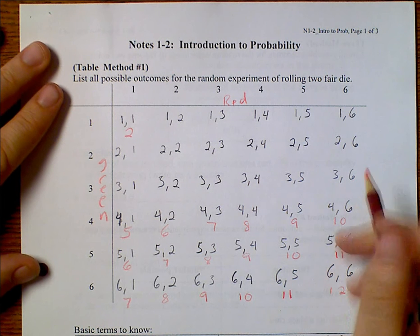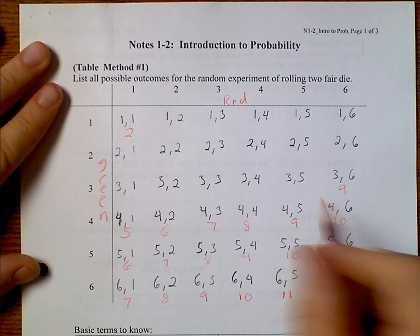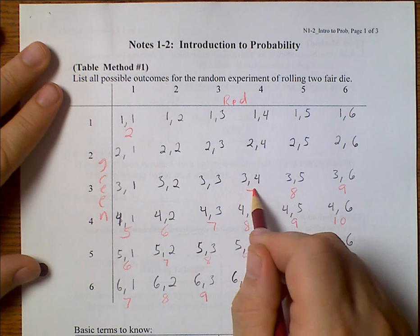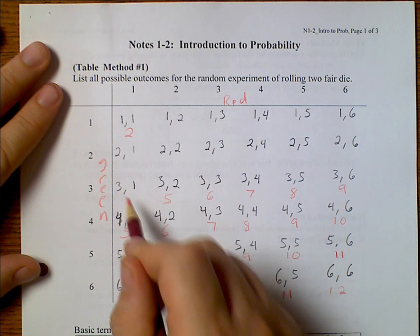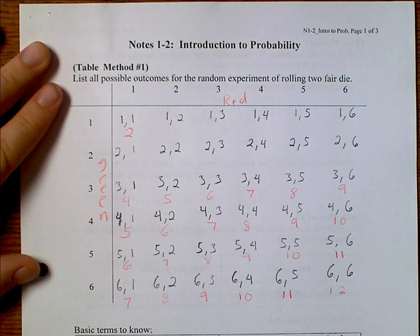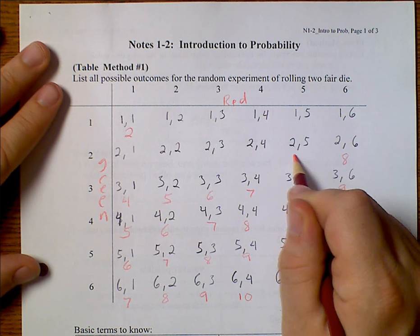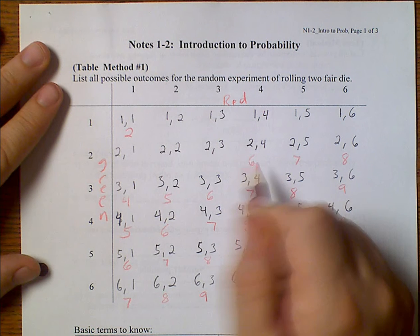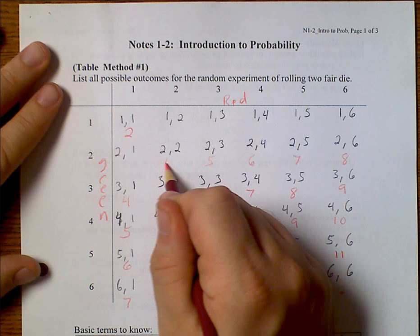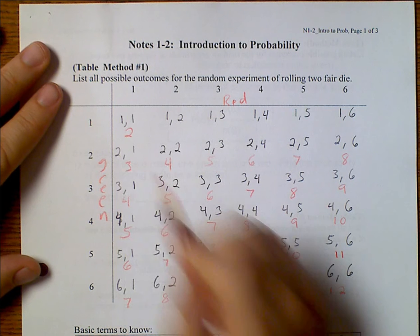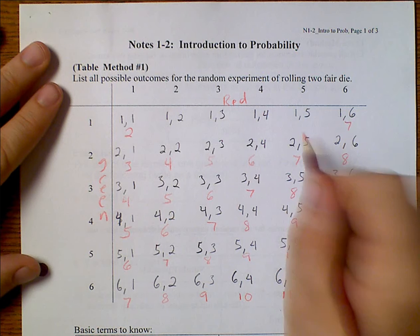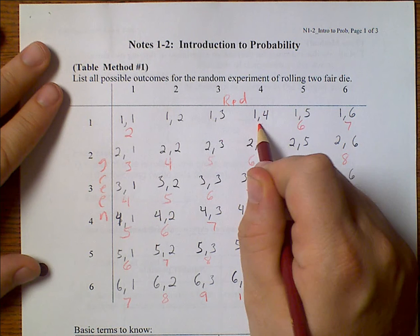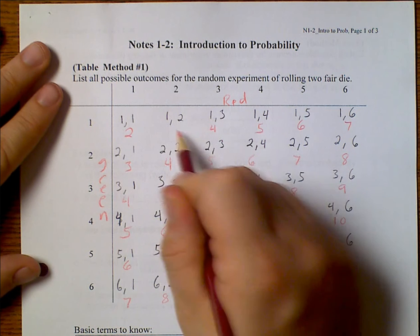Four and six, that would be ten. And then nine, eight, seven, six. Four and one make five. Three and six is nine, eight, seven, six, five. Three and one make four. Two and six make eight. Seven, six, five, four. Two and one make three. And then one and six make seven, six, five, four, and three.